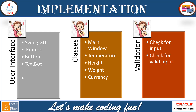There will be five classes. One will be for the main window, and the others will cover temperature, height, weight converter, and currency converter. We are going to cover all four important units: temperature from Celsius to Fahrenheit and Kelvin, height in different units, and weight and currencies. For validation, we need to check for empty input or invalid input and display messages for debugging errors.